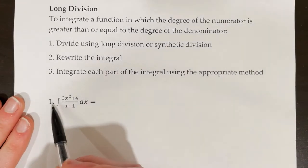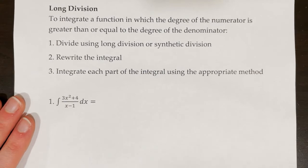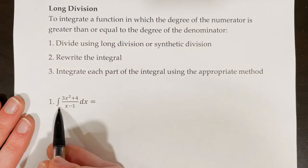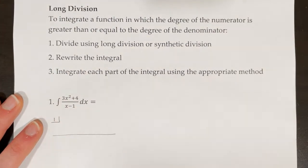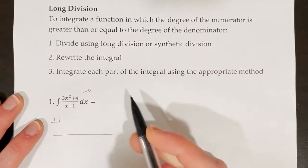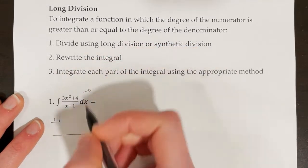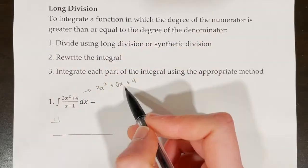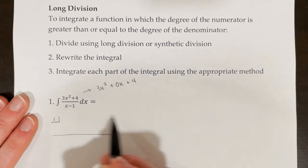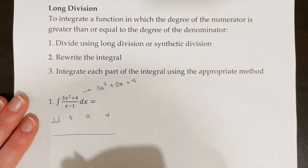Let's practice with example one: the antiderivative of (3x² + 4) / (x − 1). I'm going to use synthetic division. The denominator is x − 1, so we put a 1 in the corner box. We need placeholders, so we rewrite 3x² + 4 as 3x² + 0x + 4. Then we line up the coefficients: 3, 0, and 4.